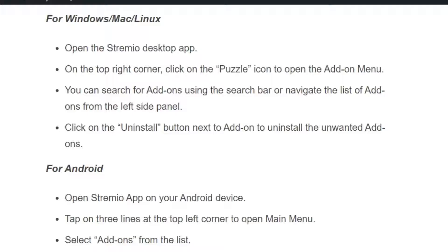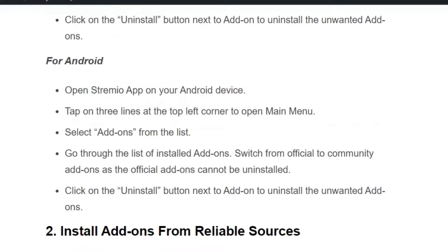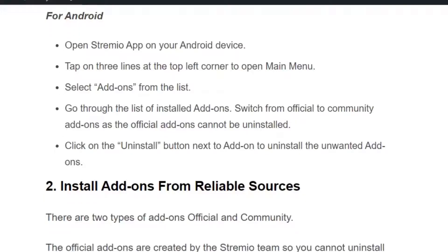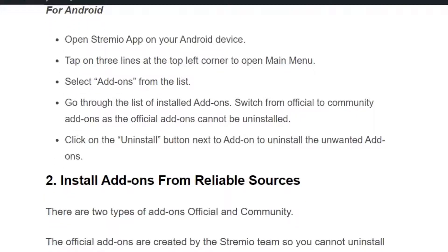If you are using an Android device, open the Streamio app and click on the three horizontal lines to open the menu. Select addons from the list. Go through the list of installed addons and switch from official to community addons, as the official addons cannot be uninstalled. Click on the uninstall button next to the addon to uninstall all unwanted addons.